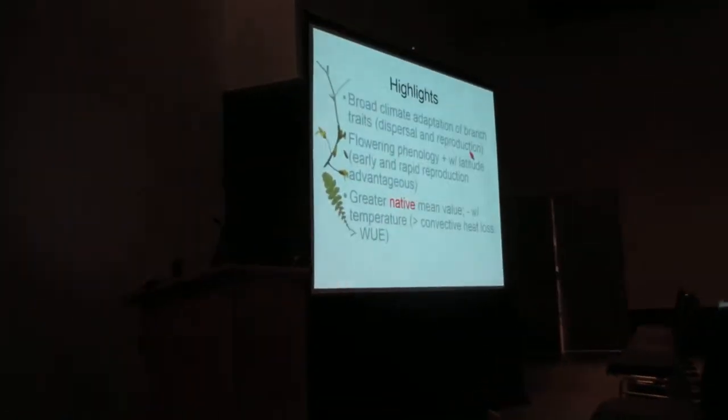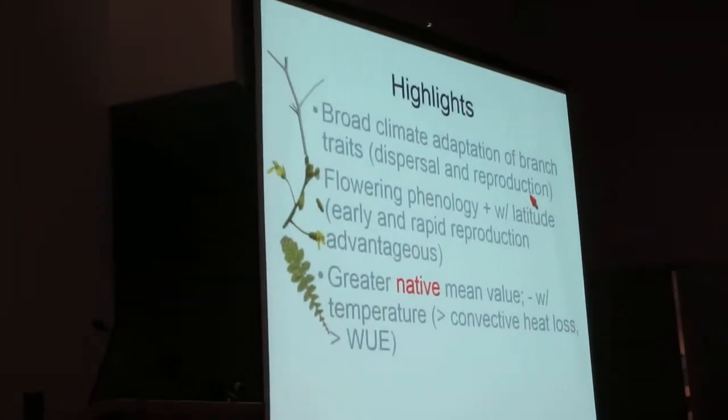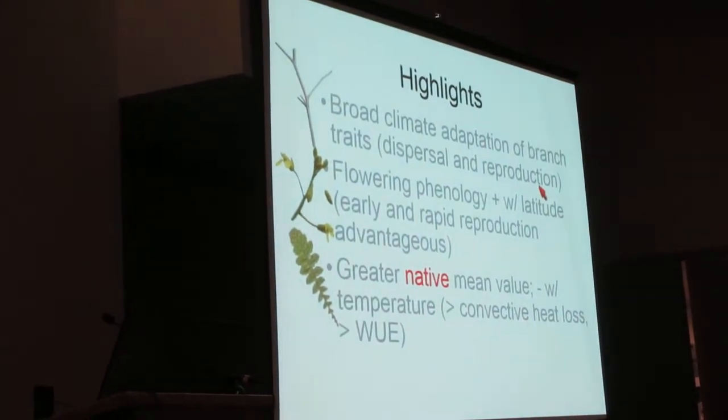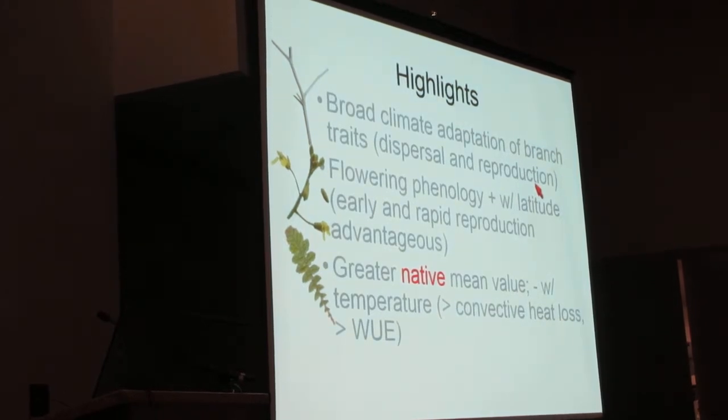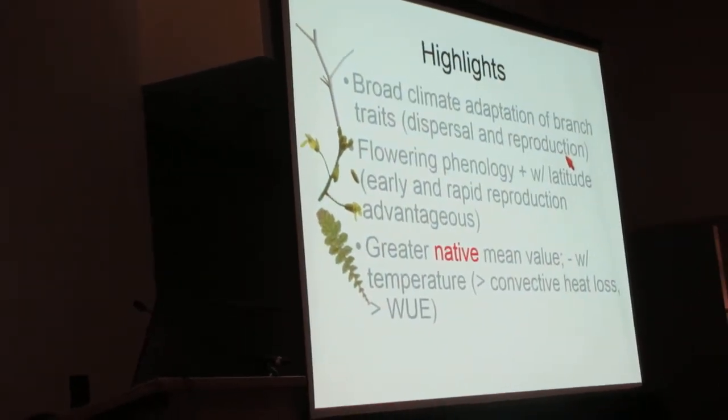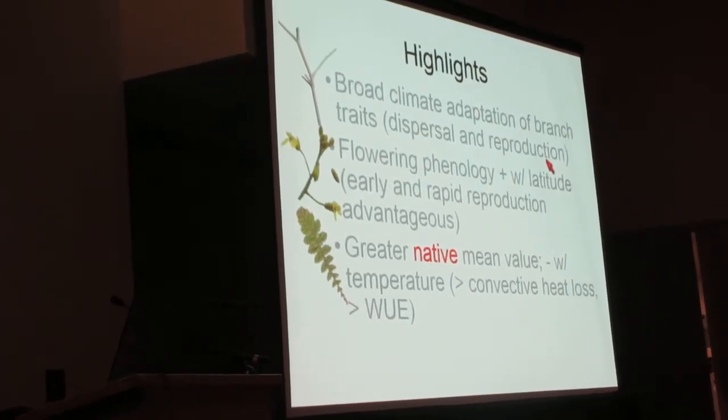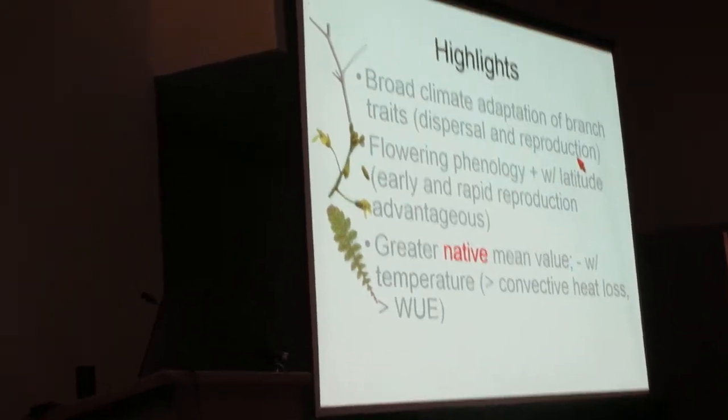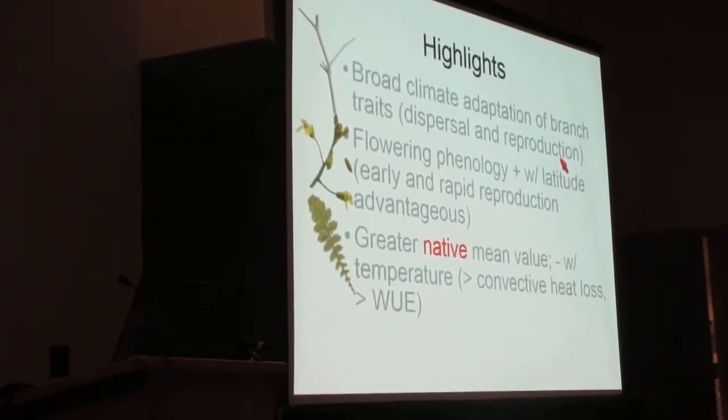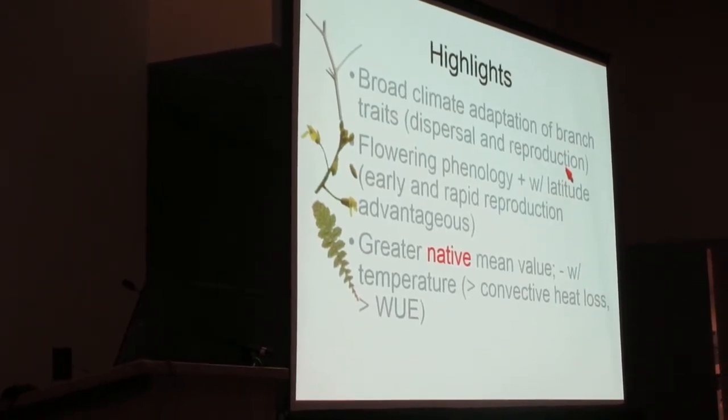I found that the natives have broader leaf serrations. For both ranges, it's associated with temperature, but for the invasive range, it's negatively associated with temperature. I think that's because it's associated with increased convective heat loss and increased water use efficiency to reduce leaf damage and to be more efficient in the desert.